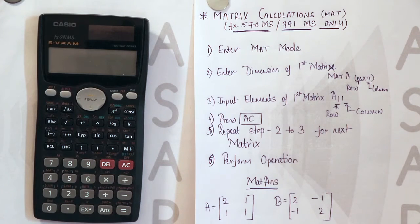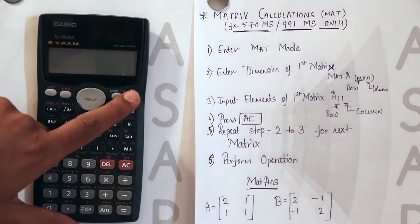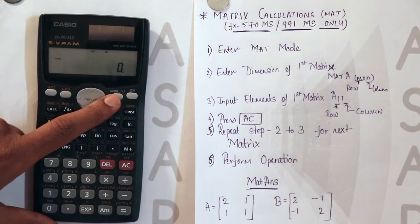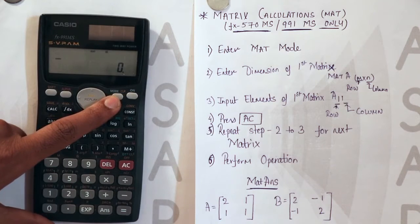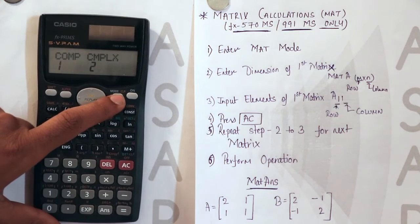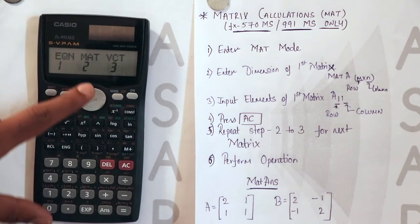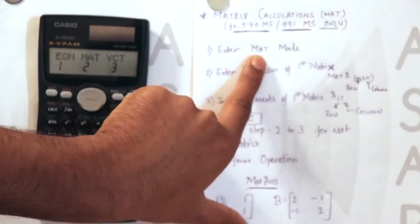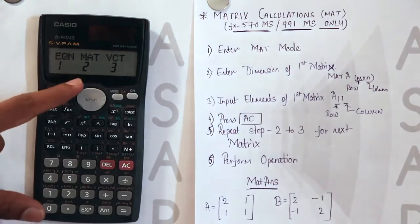Today we will see the basic things required for matrix calculations. First we will turn on the calculator. Now we will enter the matrix mode. You need to press the mode button three times. Here you can see mat. Even here I have mentioned mat mode.